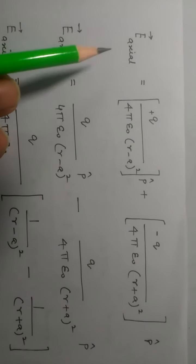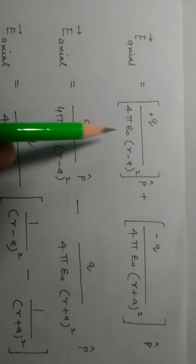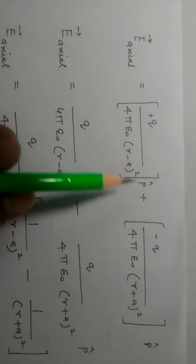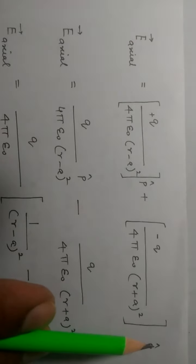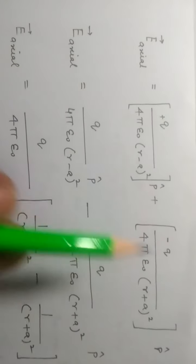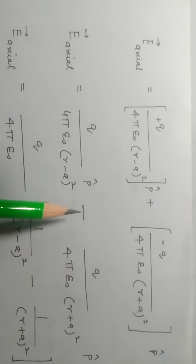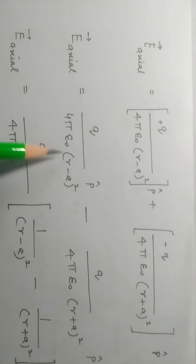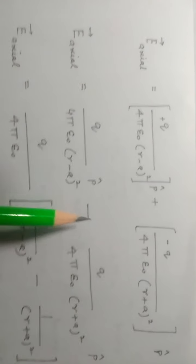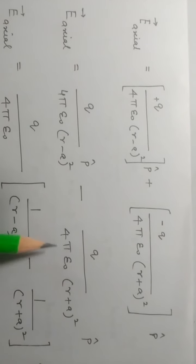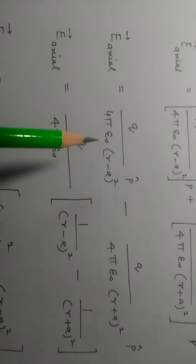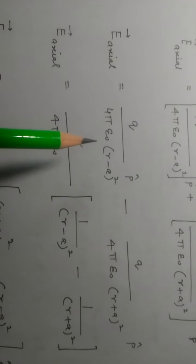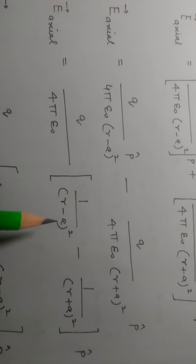The resultant electric field E_xl is equal to q upon 4π epsilon times (r minus a) squared p-hat, plus minus q upon 4π epsilon times (r plus a) squared p-hat. Opening the bracket, E_xl equals q upon 4π epsilon times (r minus a) squared p-hat minus q upon 4π epsilon times (r plus a) squared p-hat. Taking common factor q upon 4π epsilon, remaining: 1 upon (r minus a) squared minus 1 upon (r plus a) squared, times p-hat.